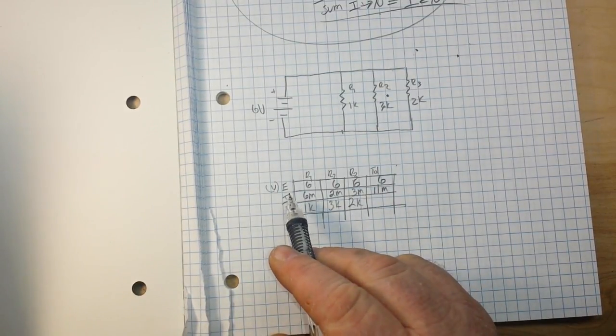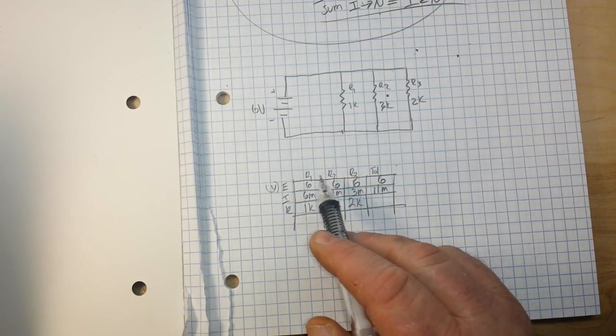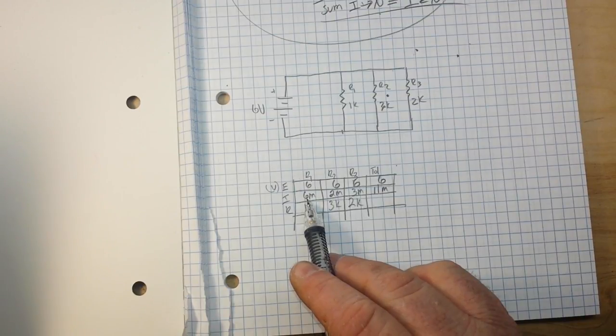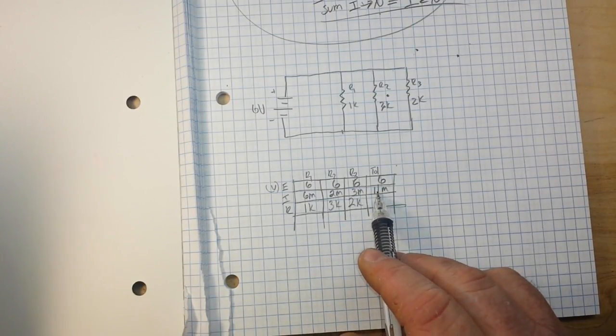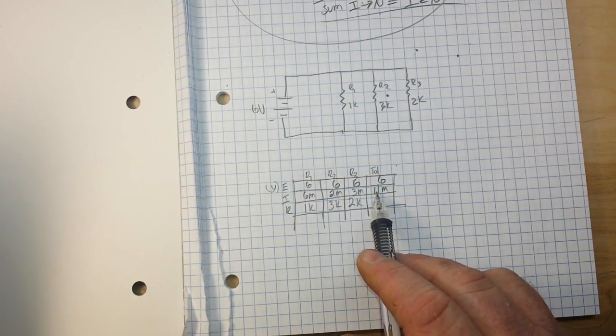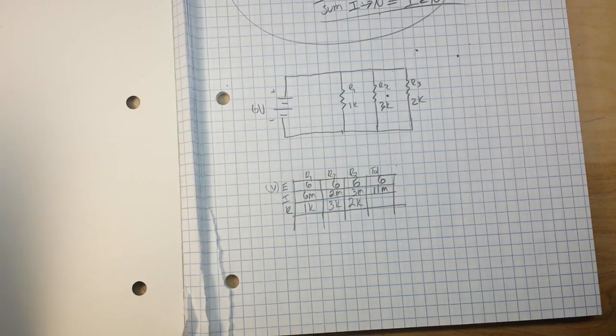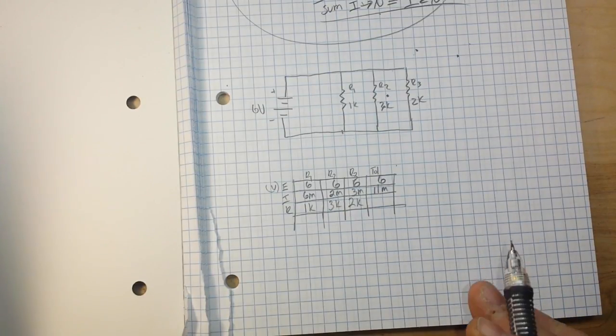If we were to change our voltage across the circuit, say to 24 volts, that would make this 24 milliamps, 8 milliamps, and 12 milliamps, giving us a total of 44 milliamps. But our proportions would remain the same. The current through R1 is still exactly twice that of R3, despite the fact that the source voltage has changed. The proportionality between the different branch currents is strictly a function of the resistance.